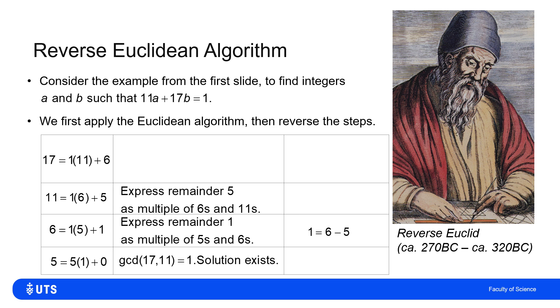I now need to express the next remainder of 5 in terms of 6s and 11s. 1 is 6 minus 5, which is 6 minus 11 minus 6, or 2 lots of 6 minus 11.